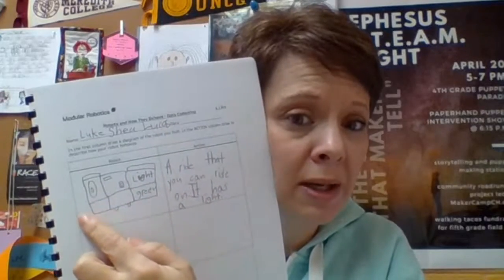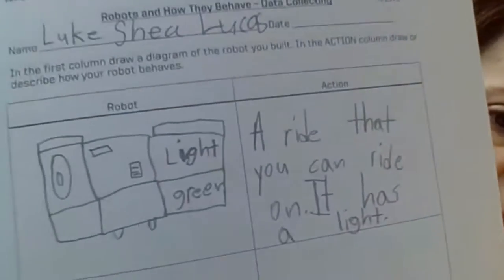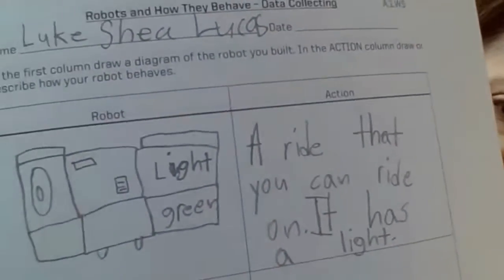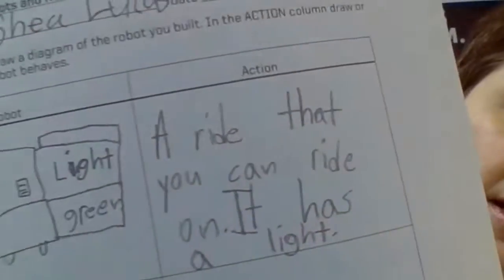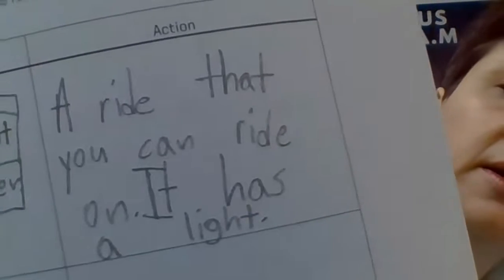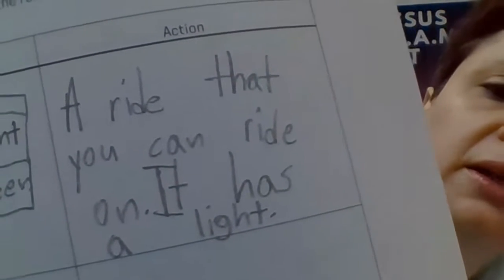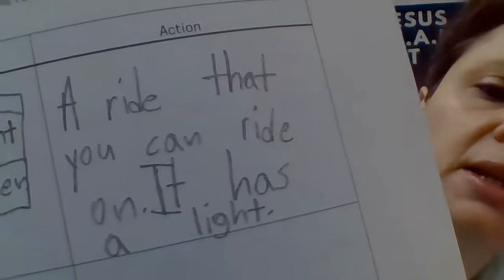So you're going to have to fill in the blanks here. Not really blanks, well actually that's a blank, that's a blank, maybe it's not labeled. But let's look at Luke Shea and Lucas' challenge. They created a robot that was a ride that you can ride on and it has a light.